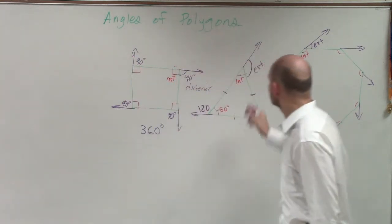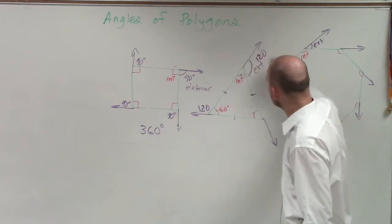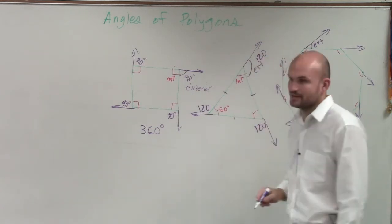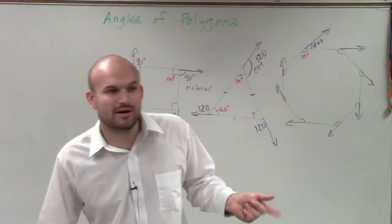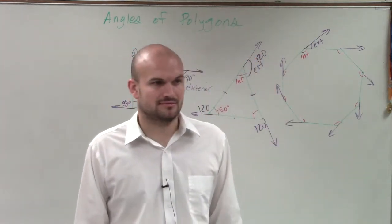So we have 120. So if that's 120, that's 120. And that's 120. So therefore, Robert, 120 plus 120 plus 120 is what? 360. 360.